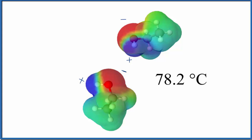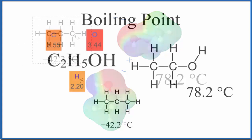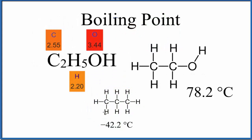In contrast, if we had something like propane, here we have a similar molecule, but this isn't a polar molecule, and you can see it boils at negative 42.2 degrees Celsius, really cold, where ethanol, that's boiling at 78.2 degrees Celsius, and that's because of that dipole and the hydrogen bonding in ethanol.